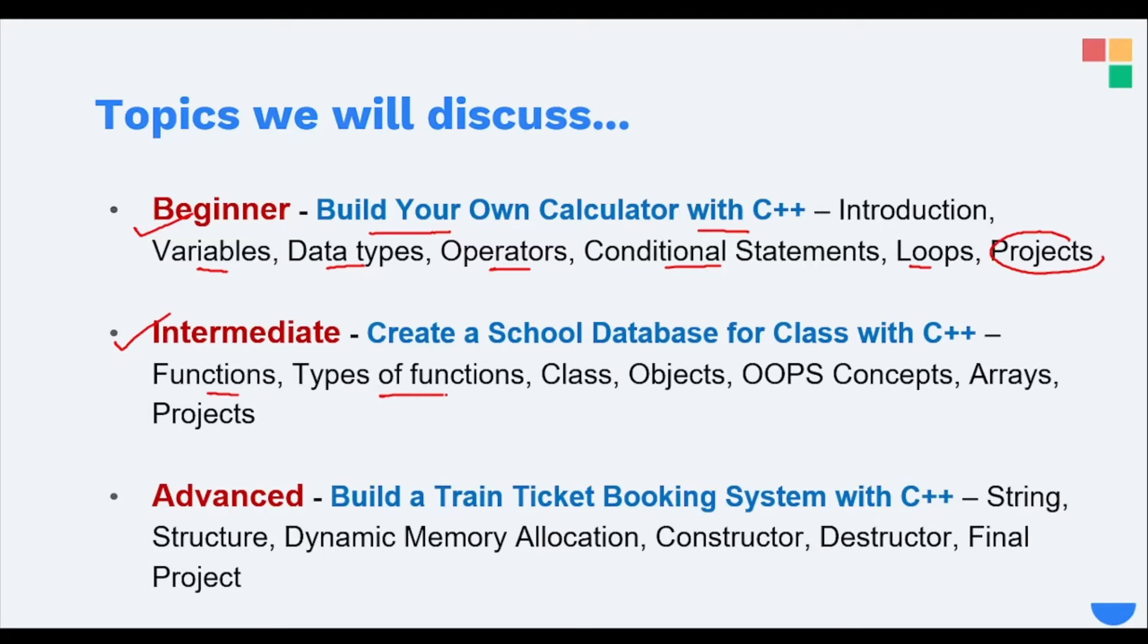Then we'll move to the intermediate level, where we'll understand functions, types of functions, classes, objects, OOP concepts like inheritance, abstraction, types of inheritance, and arrays. We'll use all these concepts to make our intermediate project: create a school database for class with C++.